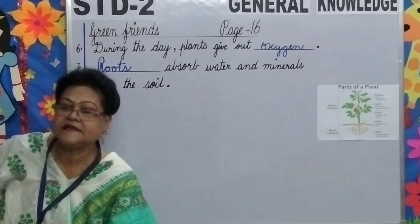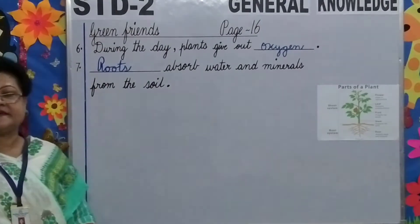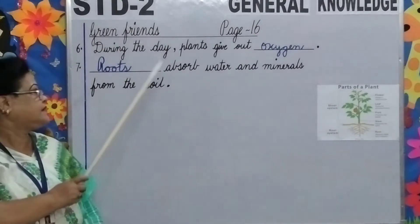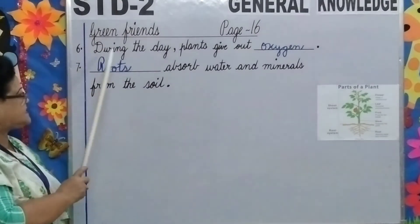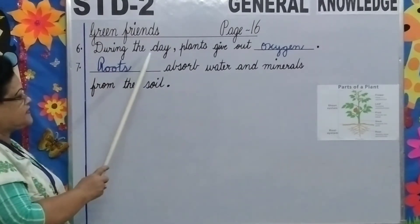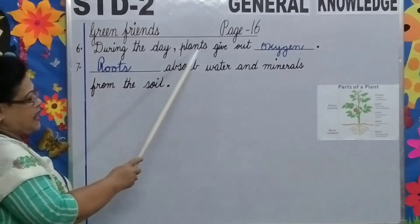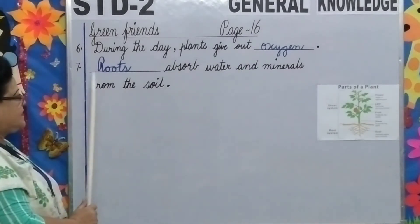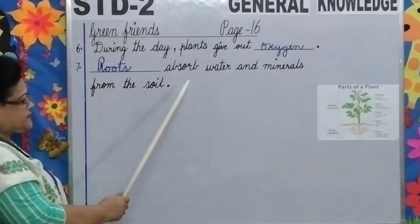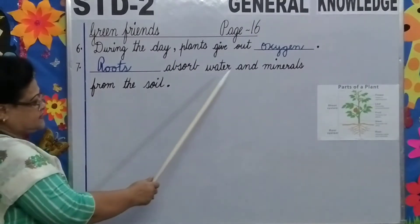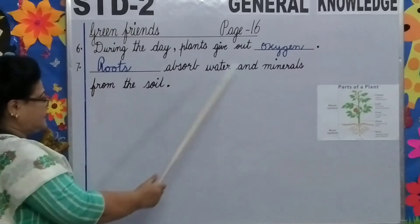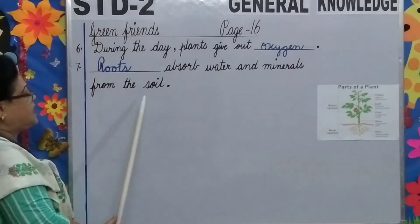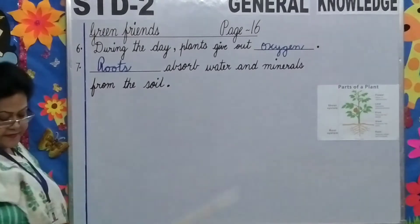Let us read the sentences, children. Number 6: During the day, plants give out oxygen. Number 7: Roots absorb water and minerals from the soil.